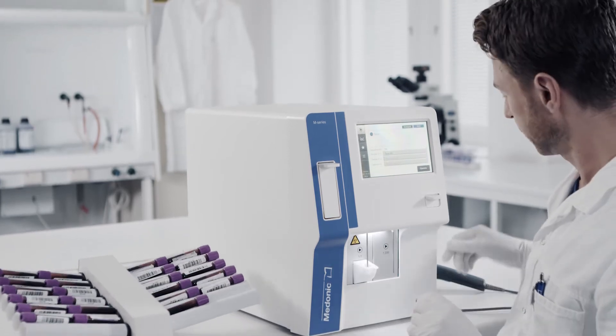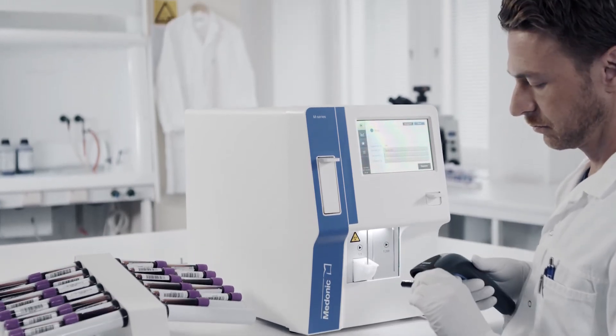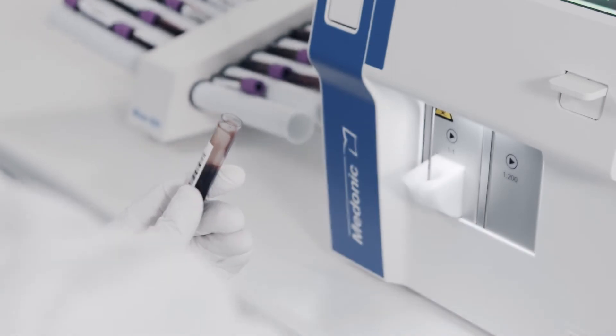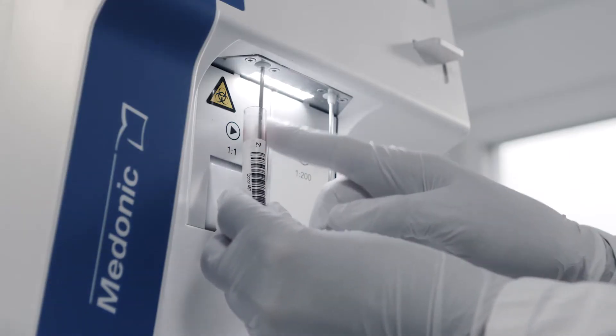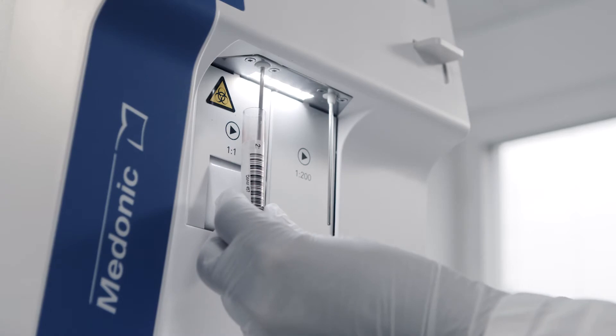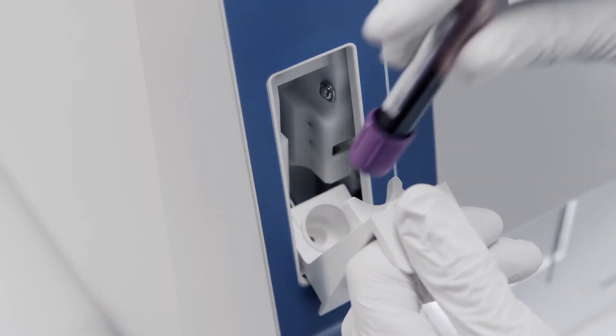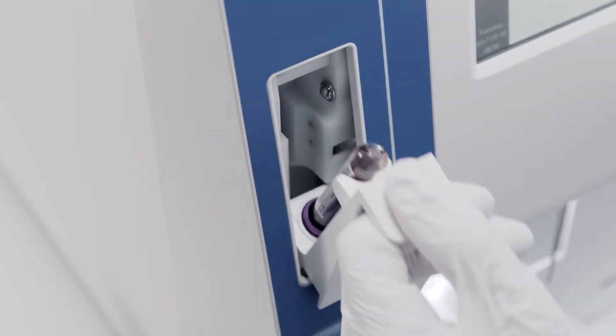With its four different models, Madonic M32 gives you more options than any other unit of its kind. From whole blood, you can sample using the traditional open vial method, or choose the increased safety of closed-tube sampling that our cap-piercer model offers.